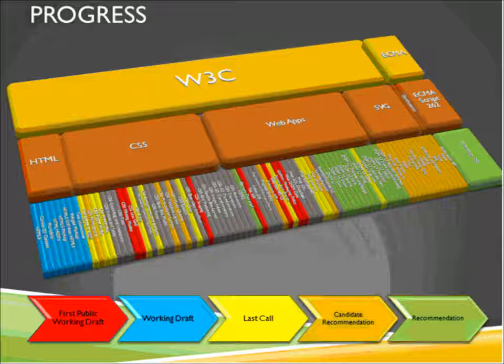Then it spends time in working draft mode, shown in blue, where it is constantly being edited, added to, and refined. From there it moves to yellow — last call — meaning it's pretty close to where we want it to be, the last call for any additions and changes. Finally, in orange, the working group puts together a candidate for recommendation. Then it moves to the green stage, where it's pretty much set in stone as the final recommendation.